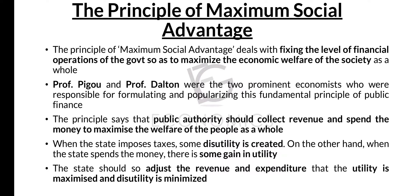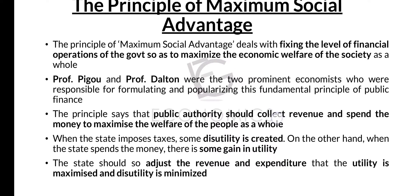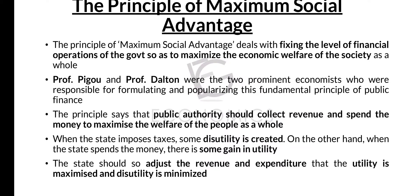The principle deals with fixing the level of financial operations of the government. The financial operations of the government have two sides. The first side is government expenditures — the expenses that the government makes for the public. The other side is that the government collects tax for revenue.